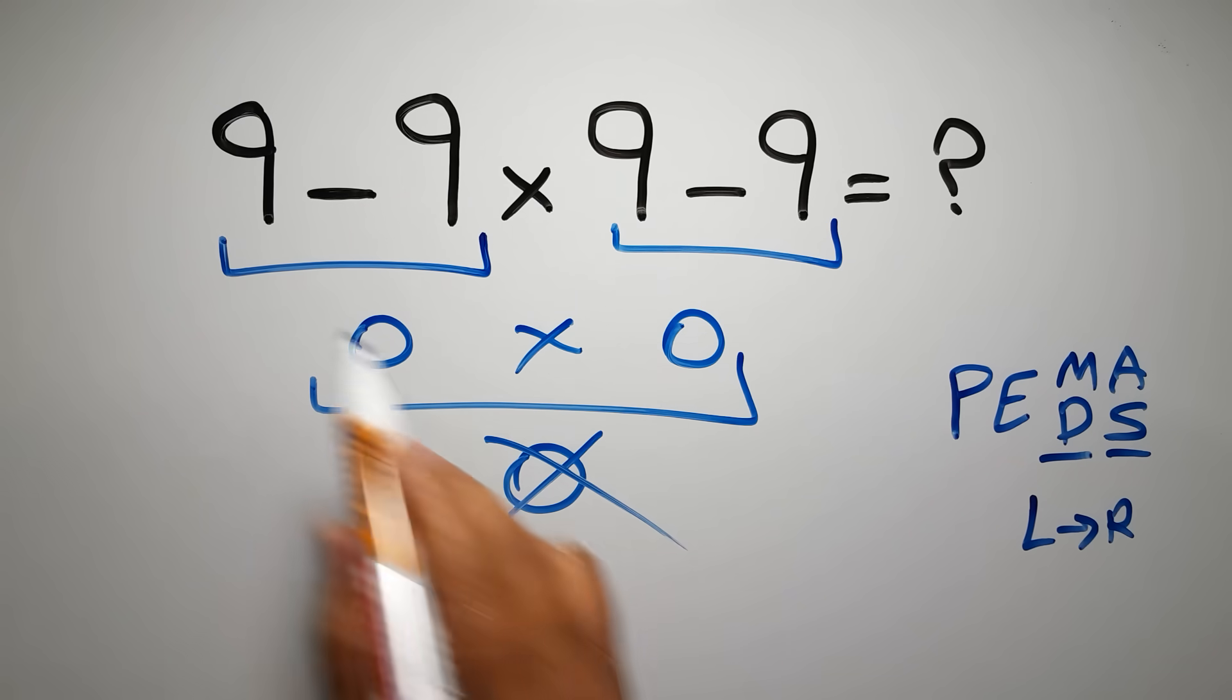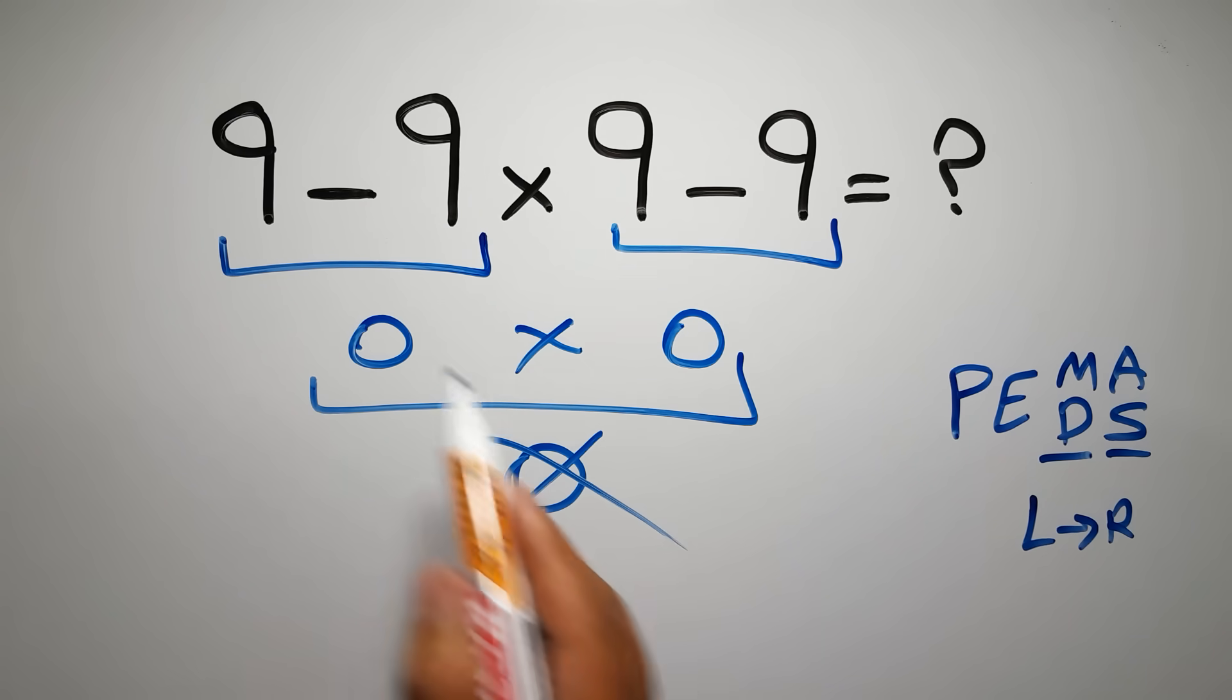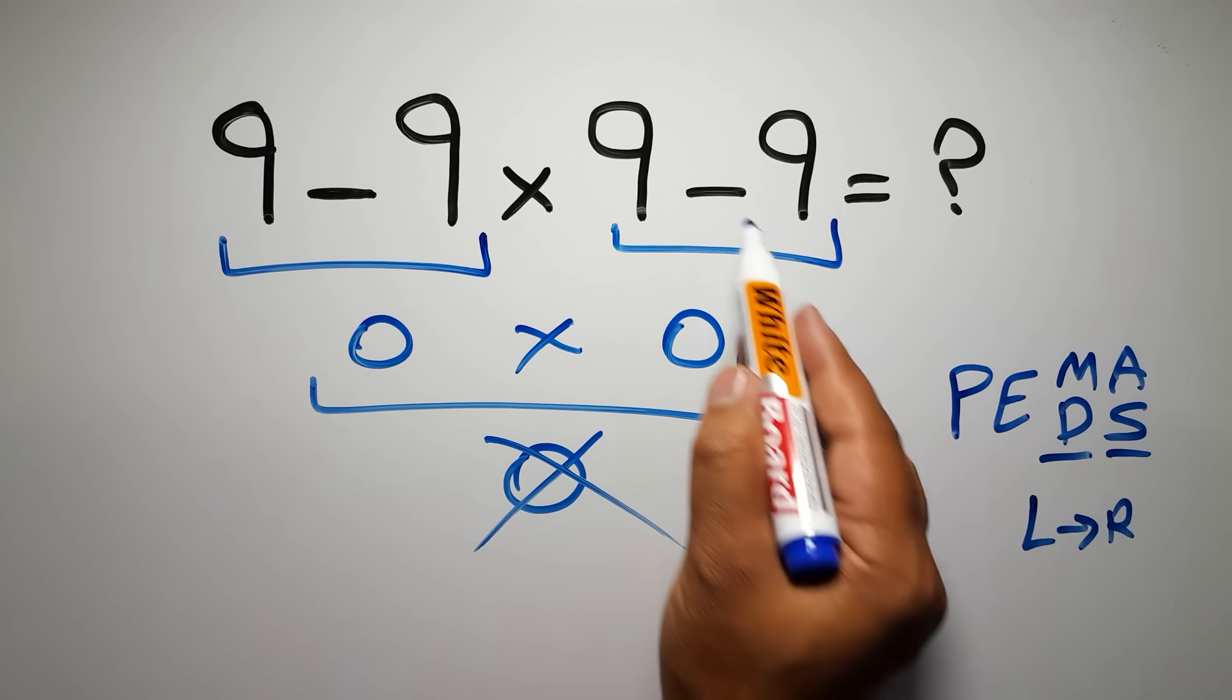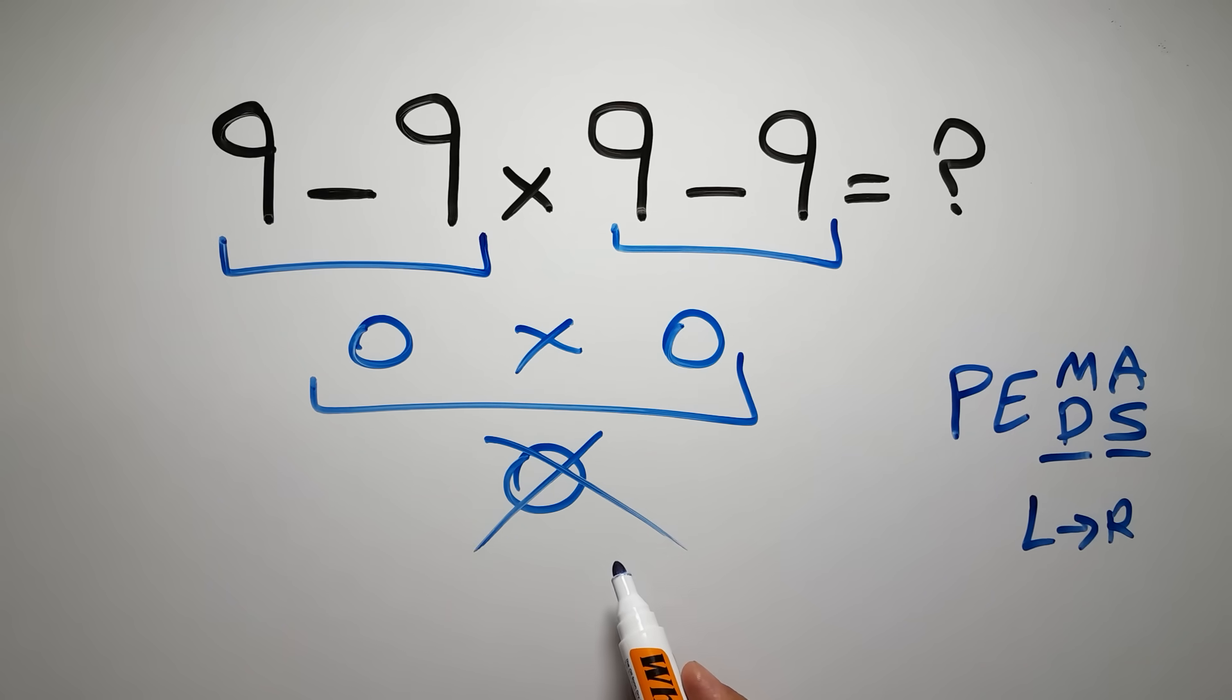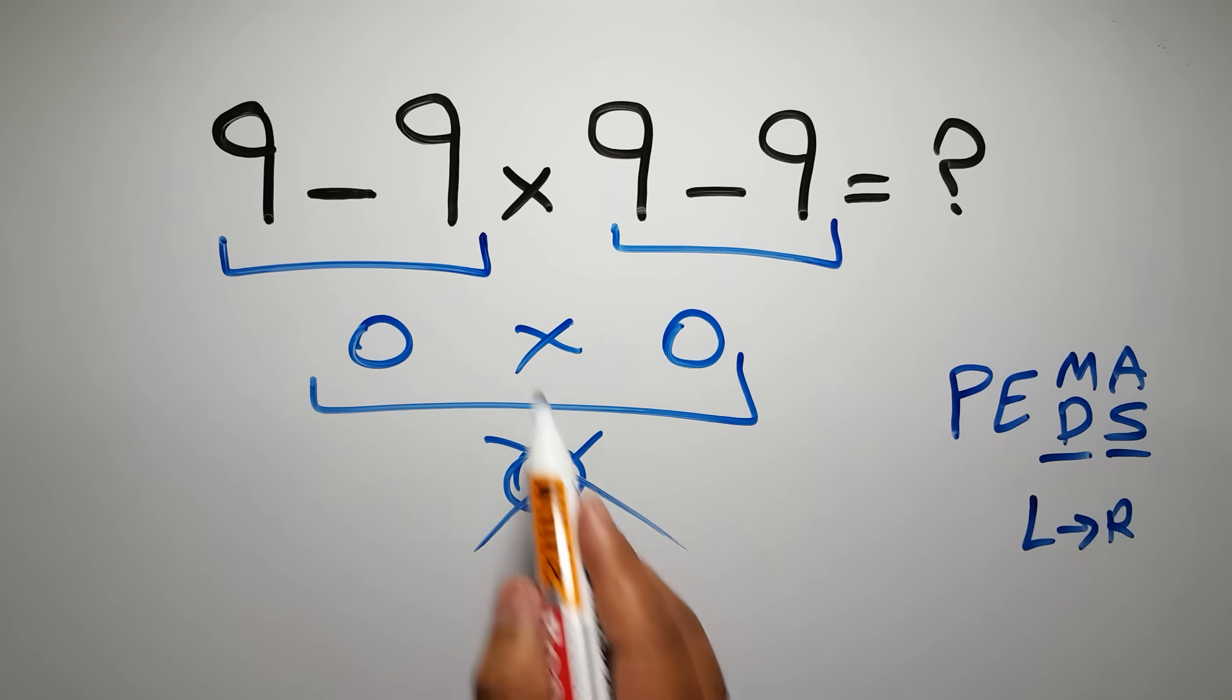So here first we have to do this multiplication, then this subtraction, and finally this subtraction. If we do this subtraction or this subtraction before this multiplication, it is wrong.